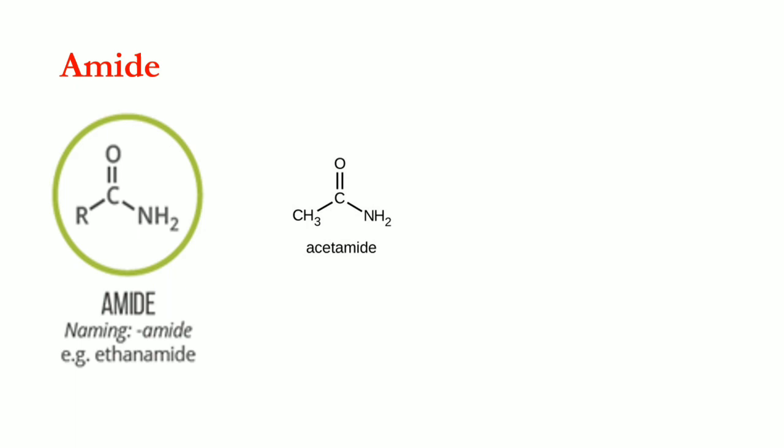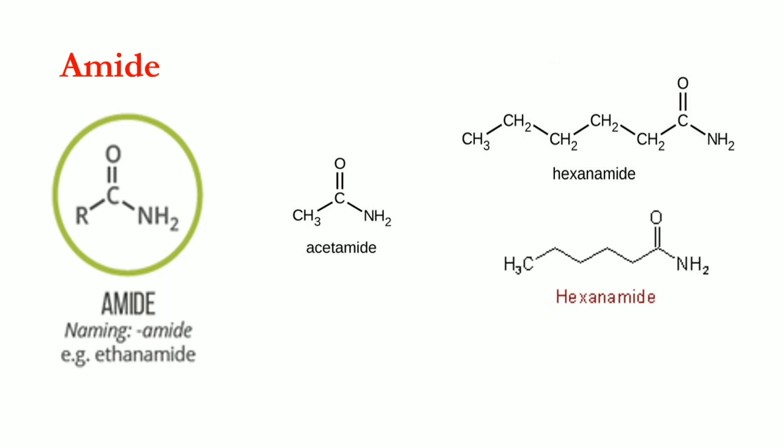For naming amides, we add the suffix 'amide'. An example is ethanamide, also called acetamide in the common system — 'acet' indicating two carbons. The amide group is usually at the terminal position. A six-carbon chain gives hexanamide. This open-chain structure can also be shown as a closed-chain structure.